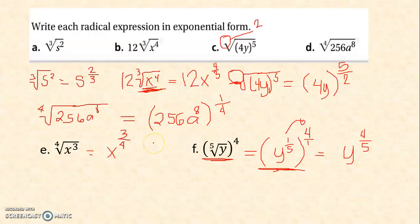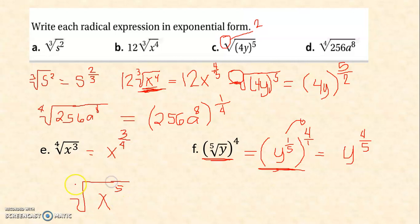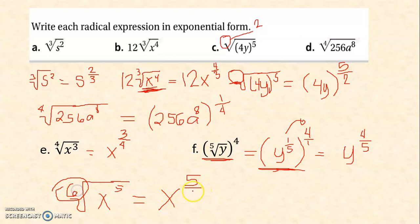Always remember that in writing radical form to exponential form: for example, the 6th root of x raised to 5. This is the radical form, and you now have x raised to 5 over 6. Your exponent is always the numerator, and the index is always your denominator.